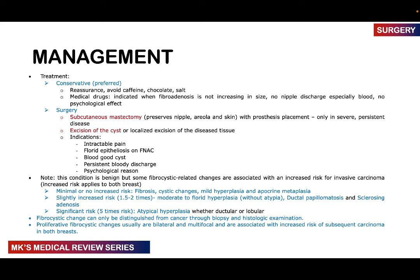This condition is benign but some changes put the patient at increased risk of carcinoma — the risk applies to both breasts, not just the affected one. Minimal risk: fibrosis, cystic change, mild hyperplasia, apocrine metaplasia. Slightly increased risk (1.5–2 times): moderate to florid hyperplasia without atypia, duct papillomatosis, sclerosing adenosis. Significant risk (more than 5 times): atypical hyperplasia — whether ductal or lobular. Fibrocystic change can only be distinguished from cancer through biopsy. Proliferative fibrocystic change is usually bilateral and multifocal, associated with increased risk of carcinoma in both breasts.